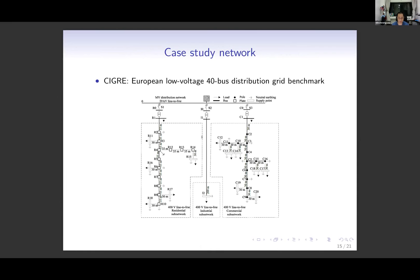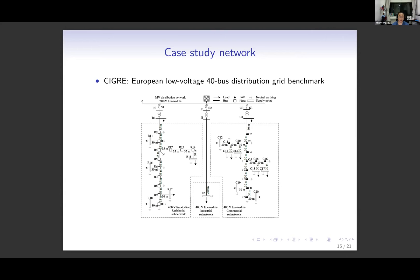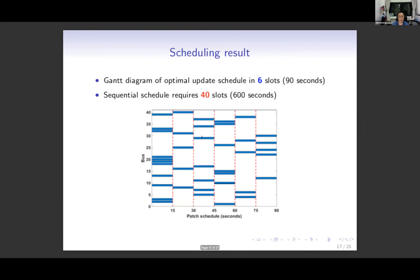Our case study uses the CIGRE 40-bus system. We assume all 40 buses have smart inverters requiring software updates. We solve different instances of our scheduling problem — our bin packing problem — with different values of H, the matrix describing voltage disruptions, to examine the effect of different levels of seriousness of update failure. The larger H, the more serious the failure. The update schedule obtained by solving our proposed integer program uses only six time slots to schedule all 40 updates, compared to 40 time slots if we sequentially scheduled updates.